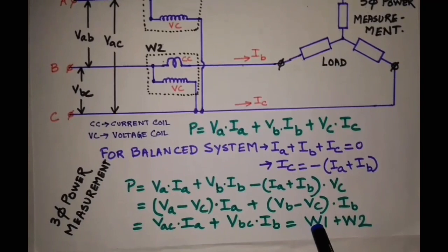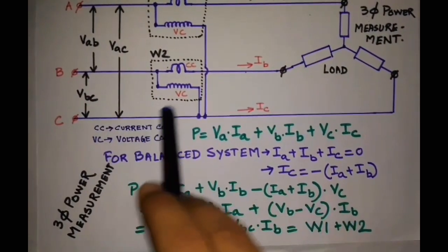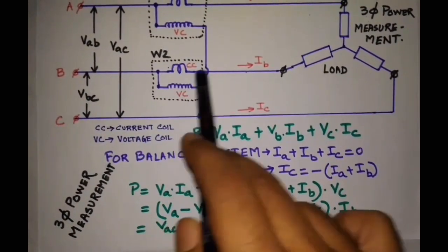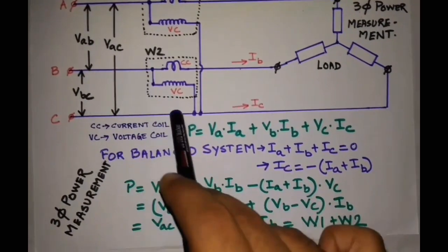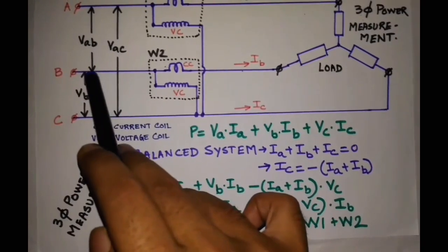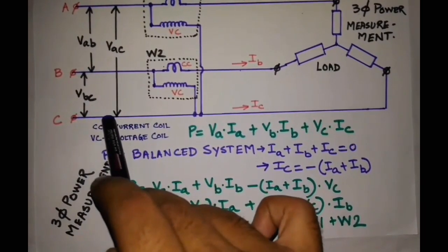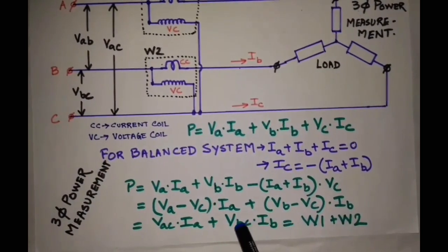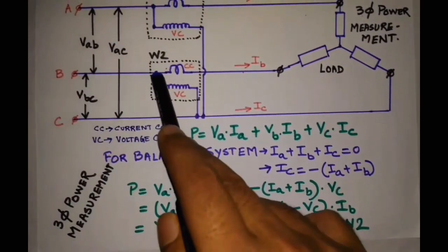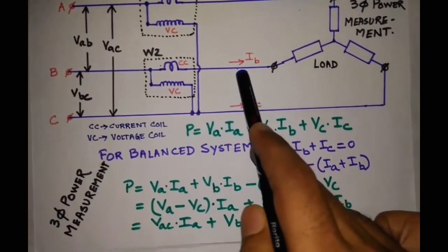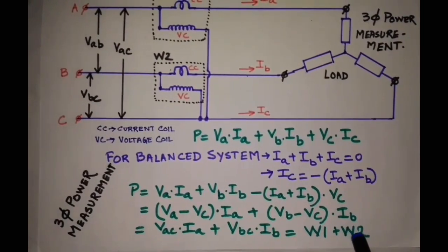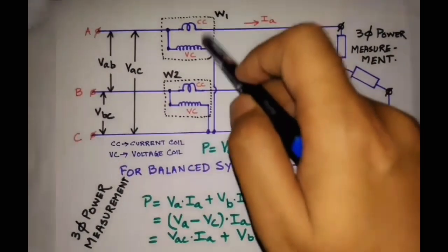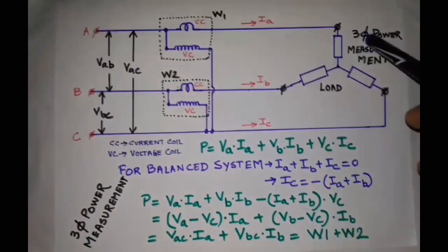Similarly, wattmeter 2 will measure current Ib and voltage Vbc, as it is connected across terminal B and terminal C. So it will measure Vbc × Ib. Vbc × Ib will give you the wattmeter 2 reading.